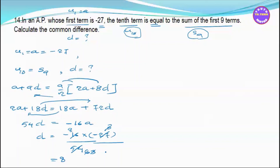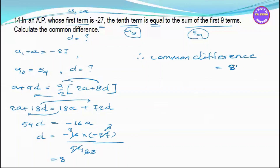If you have the common difference, you can see the common difference. The common difference in the first term is the common difference, which is equal to H. So if you have a common difference, you can see the common difference in the first term.